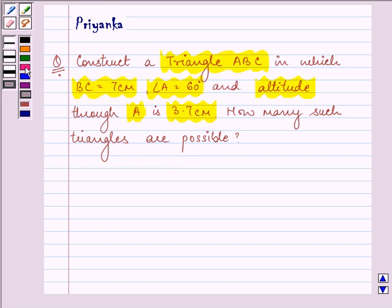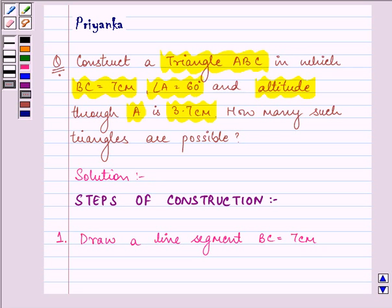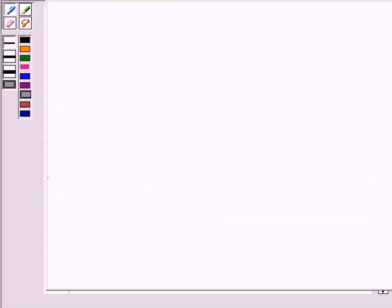Now here in this question, what I will do is I will write down the steps of construction for you and show you how it is actually done. First of all, we need to draw a line segment BC equal to 7 cm, like this.